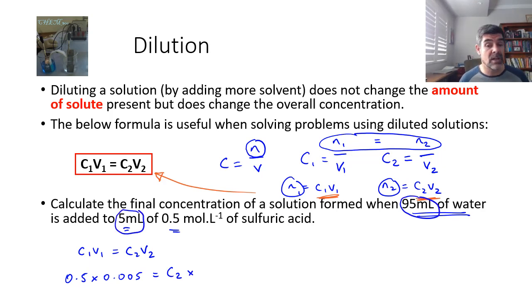And V2 is equal to the sum of this and this. Because we're adding water, we're going to increase the volume to a final volume of 100 ml. 95 plus 5 is 100. And because this is 100 ml, this is 0.1 liters.